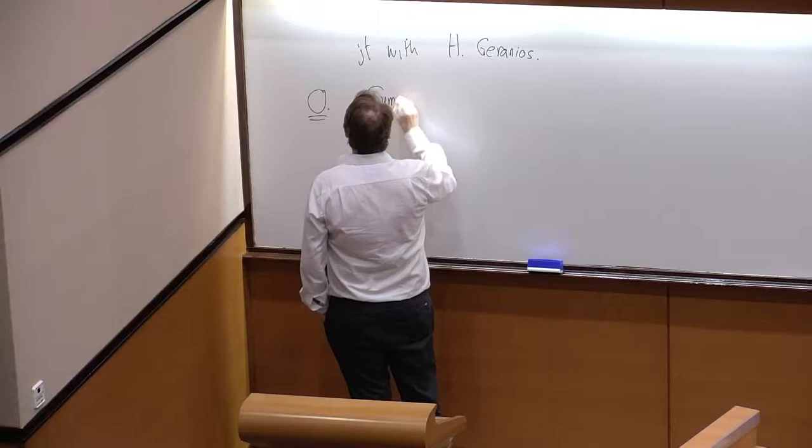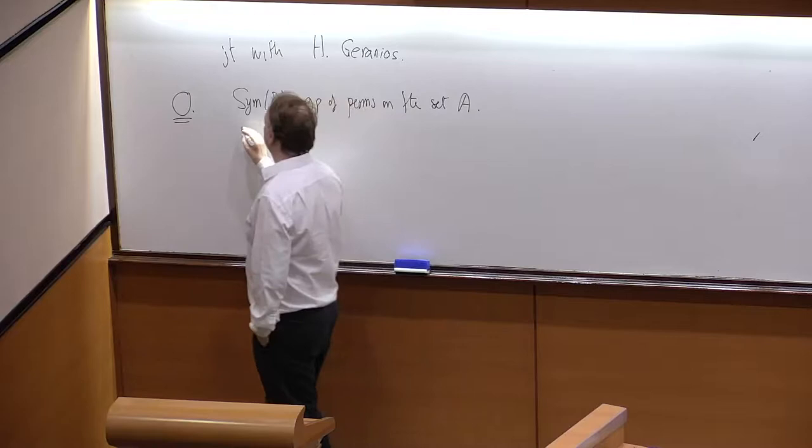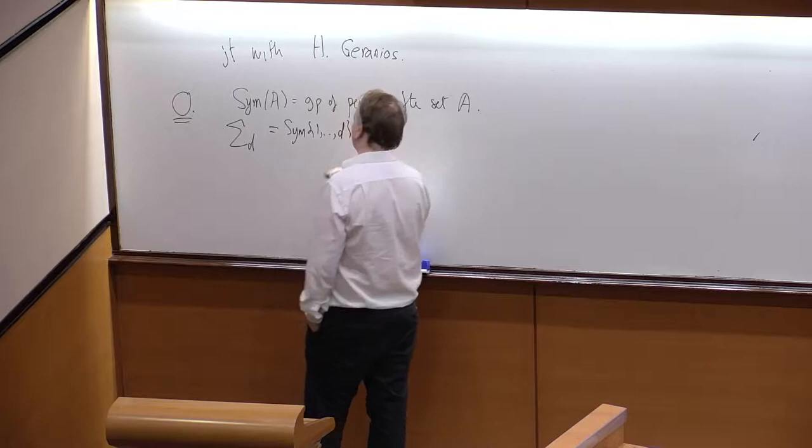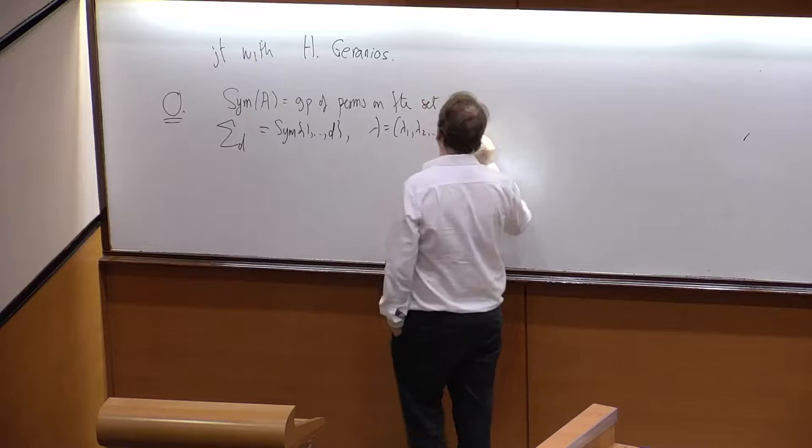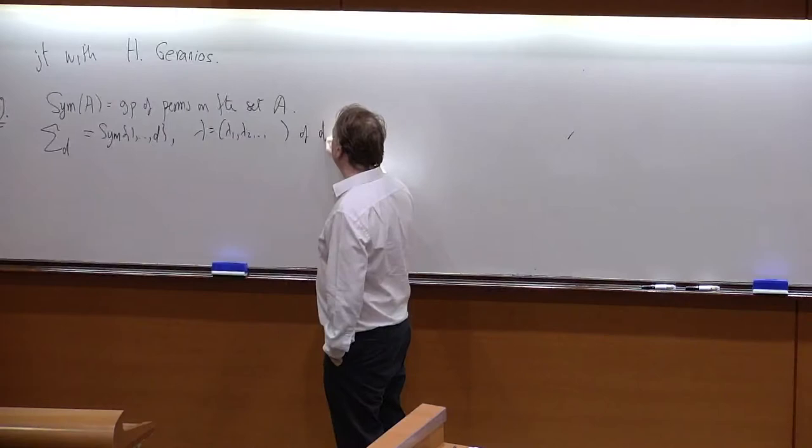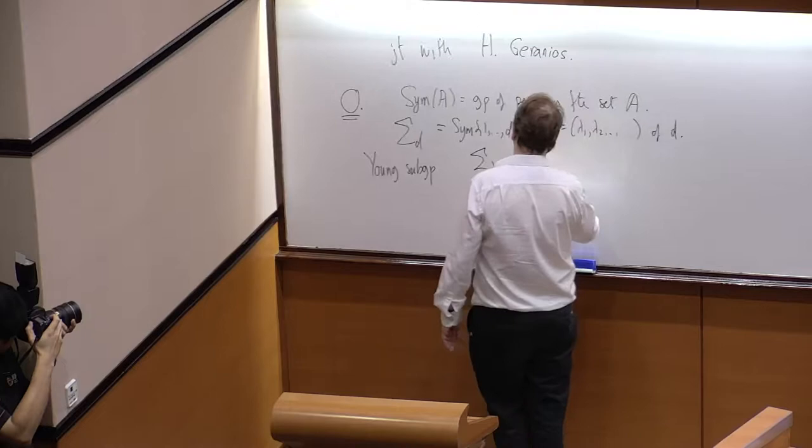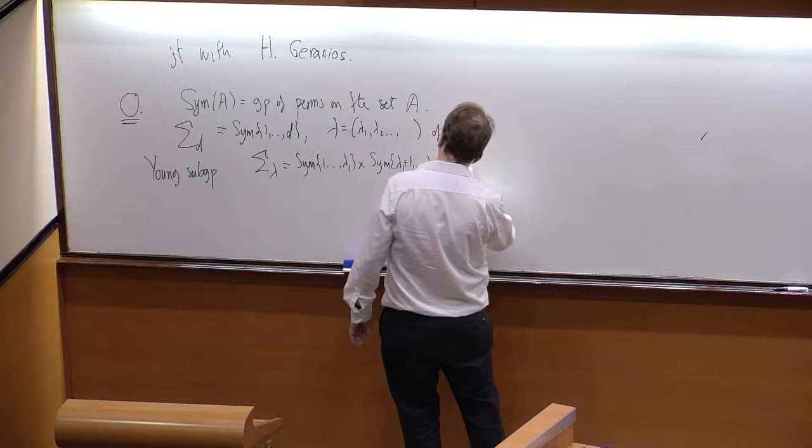So, Sym(A) will be the group of permutations on a finite set A, and because I'm not skillful with these large curly S's, sigma_D will be the symmetric group on 1 up to D, and I have a partition and the corresponding Young subgroup, sigma_lambda, that's the symmetries of the first lambda_1 numbers, the symmetry of the next ones, and so on.